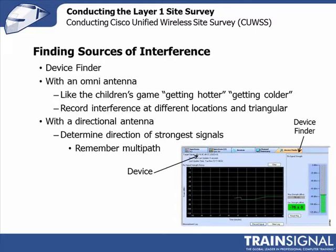Another option is to replace the omni antenna that ships with the Cisco Spectrum Expert with a directional antenna. A directional antenna can save you effort if you don't want to walk around, because you can do a broad sweep to determine the direction of the interference source. You point the antenna forward and move it in a 360-degree circle — as the interference signal gets stronger, that's the direction the interference is coming from.